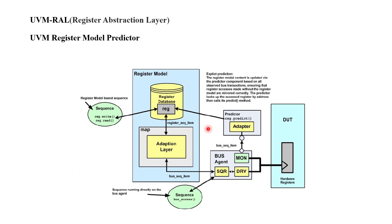That is the theory behind the Register Abstraction Layer. We discussed the register model, which consists of the register database, adapter, and predictor. In the next video, we will see the different prediction methods. There are three kinds: explicit prediction, auto prediction, and passive prediction. Auto prediction is the default for every simulator.